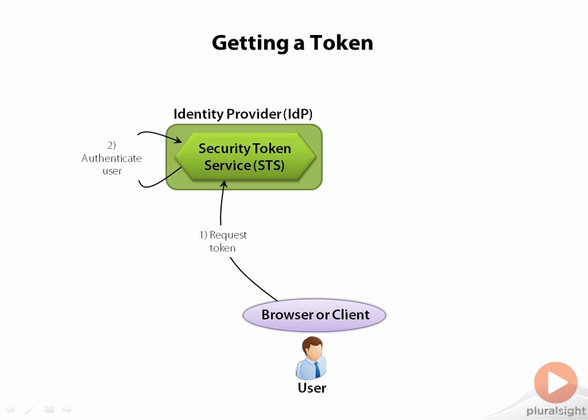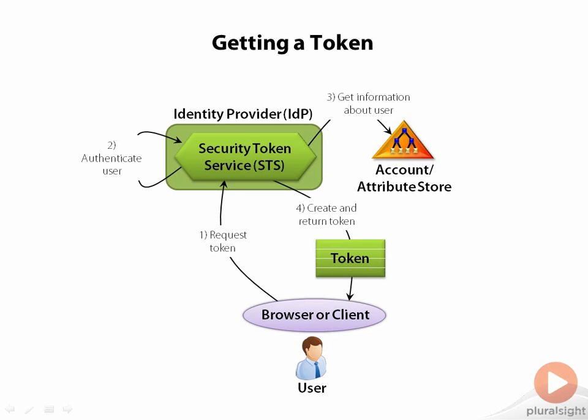Tokens contain claims — information about this user — and so the STS must find that information somewhere. To do this, it relies on an account attribute store. One common example of this is Active Directory, but by no means is that the only choice. There are lots of ways to build STSs that don't require using AD or any directory service. The STS gets what it needs to construct the claims in this token, then sends the token back to the user after digitally signing it.